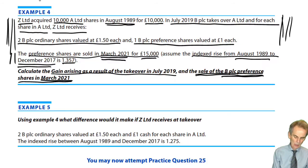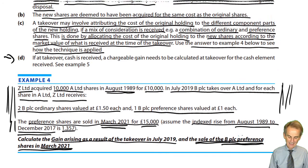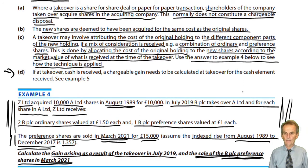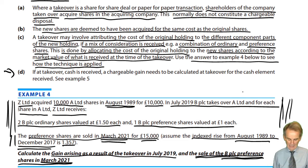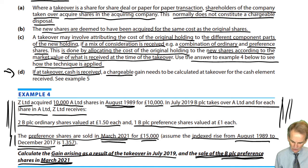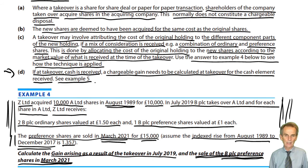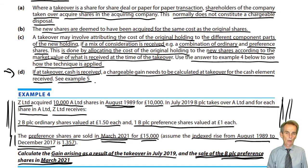What if some component received at takeover is cash? If cash is received at takeover, a chargeable gain must be calculated at the date of takeover for the cash element received — HMRC will tax you on that gain. So at the point of takeover, based on the amount of cash received, there is a need to compute a gain immediately.